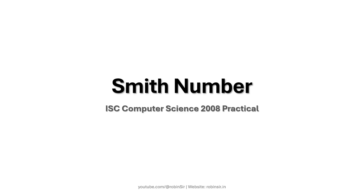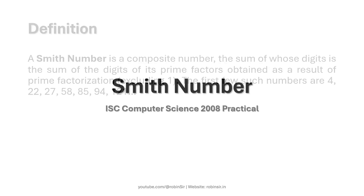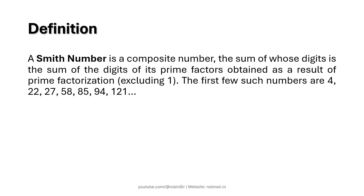This question appeared in the ISC Computer Science 2008 practical paper. According to the question, a Smith number is a composite number the sum of whose digits is equal to the sum of the digits of its prime factors obtained as a result of prime factorization, excluding 1.